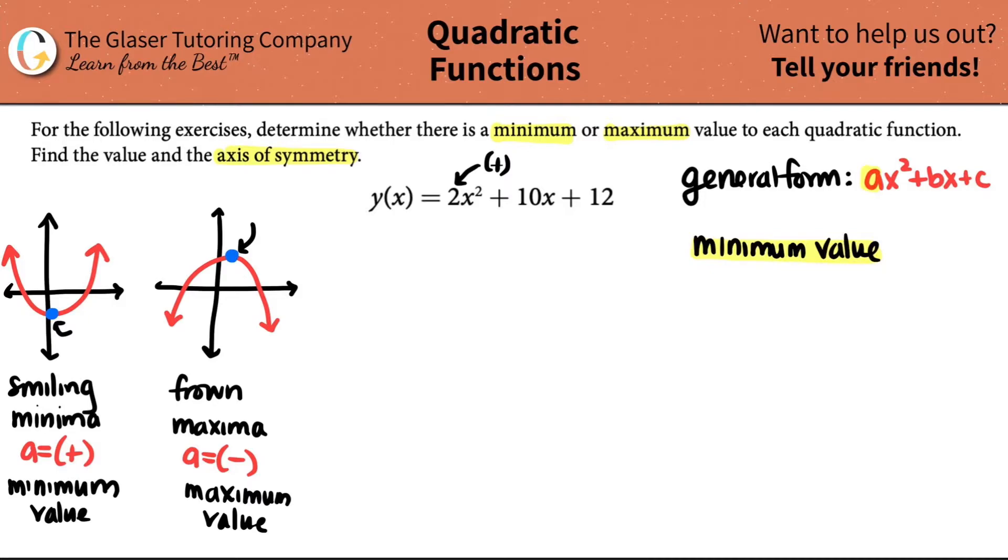A minima is the same thing as a minimum value, and the same thing for a maxima. We already know that this quadratic, since the a is positive, we have a minimum value. Now we just got to get that number. Remember, it comes from the vertex. And the vertex has two components. It's an x comma y, but specifically for quadratics we know it as h comma k. You can remember this because h comes before k in the alphabet. But how do we get h's and k's? In the general form, I only have a's, b's, and c's.